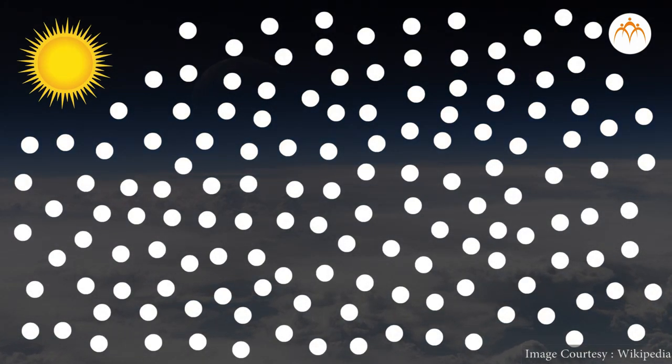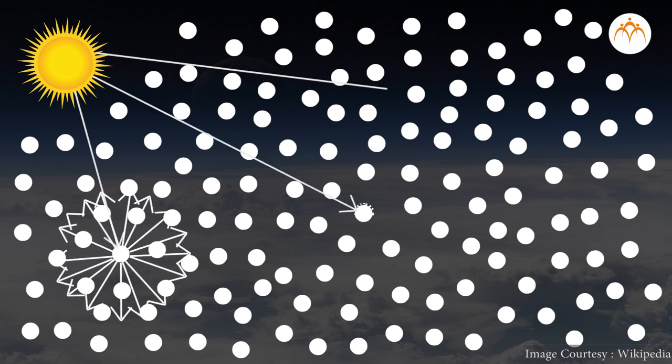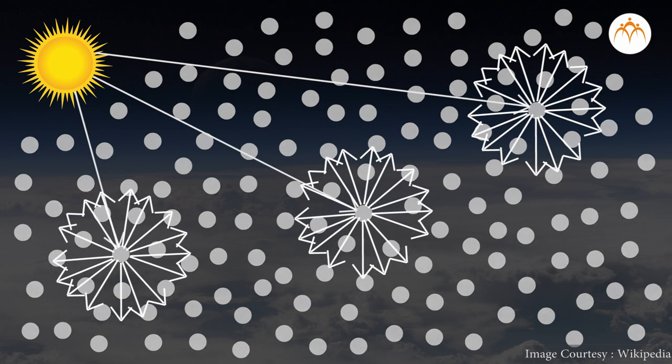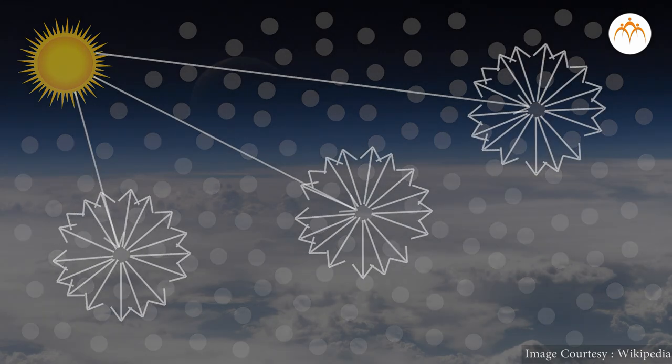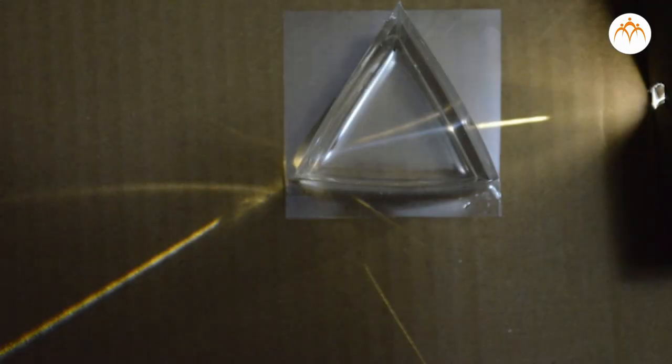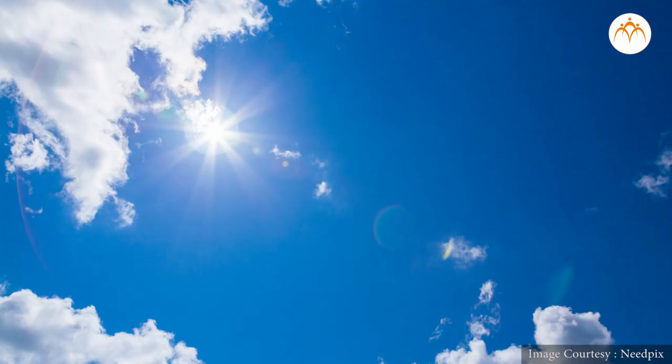During its travel from sun towards earth, sunlight bounces off these tiny particles. Sunlight is scattered after it hits these tiny particles. We have seen that white light is a combination of different colours with the help of a prism. When sunlight hits these tiny particles, blue light is scattered the most. That is the reason we see blue sky.